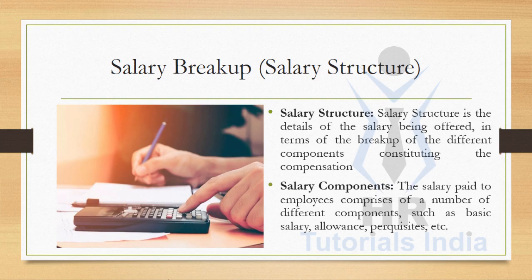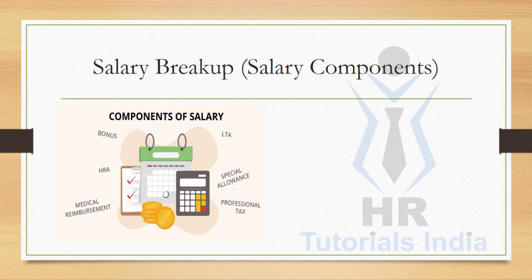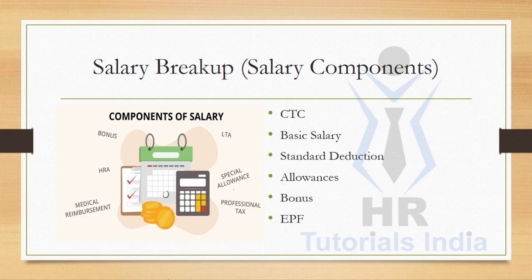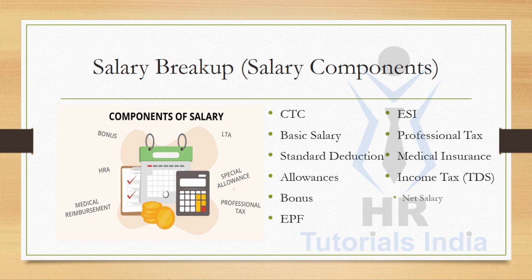The salary paid to employees comprises a number of different components such as basic salary, allowances, perquisites, etc. The full form of CTC is Cost to Company. The components of salary include: Basic Salary, Standard Deduction, Allowances, Bonus, EPF, ESI, Professional Tax, Medical Insurance, Income Tax, Net Salary, and Gross Salary.